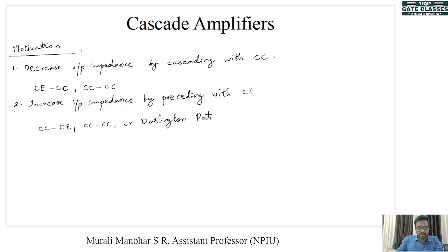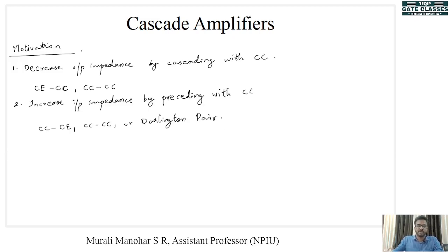We have already covered the Darlington pair, so you already know what it is. We are only going for BJT amplifiers. So, the motivation for cascading amplifiers is to decrease the output impedance by cascading with CC, or to increase the input impedance by preceding with CC.